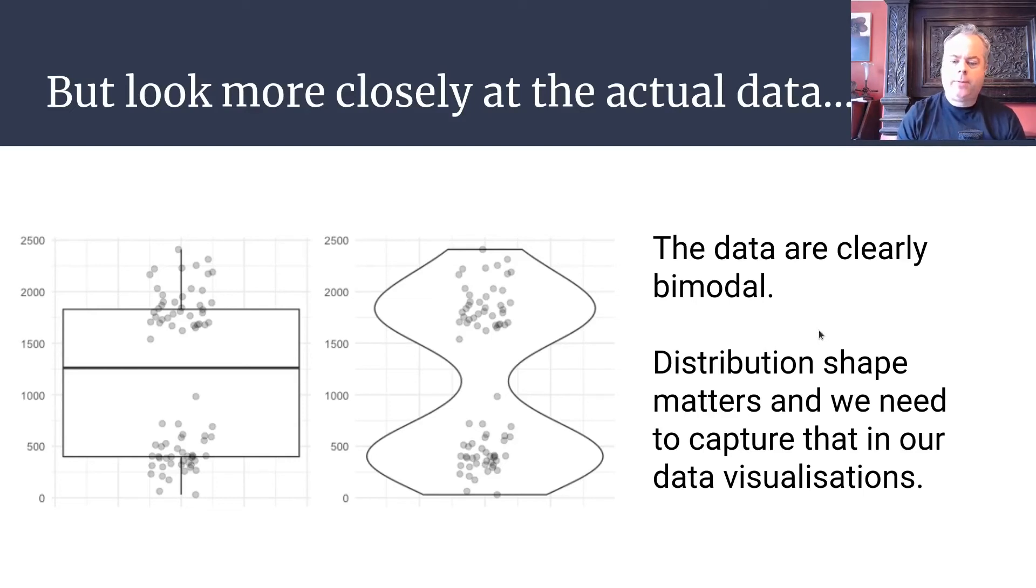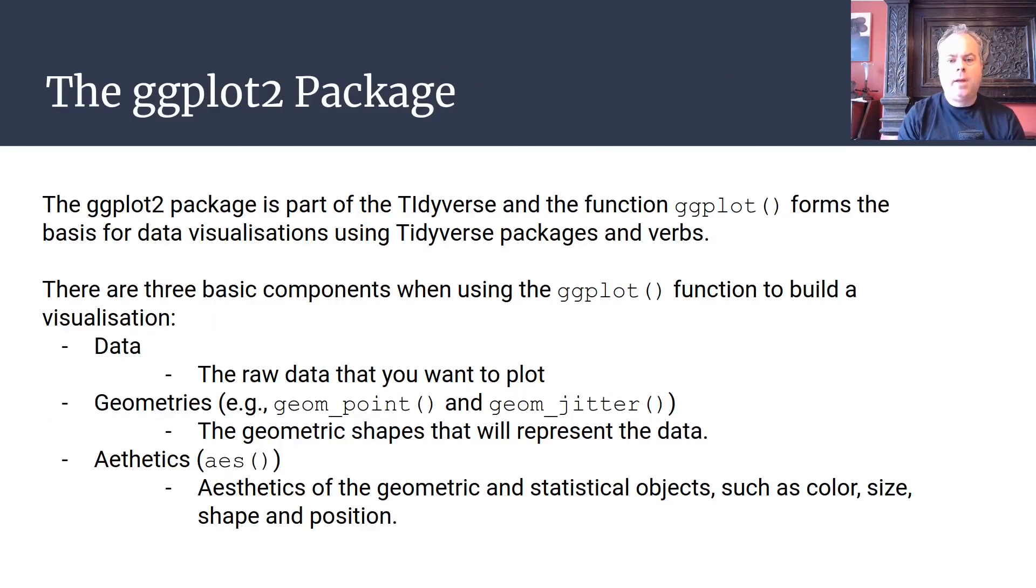We'll be looking at some of the ways in which we can better represent our data in this worksheet. We'll be looking at a way of using a violin geometry to actually capture the shape of the data distribution in our data set. We're going to be doing all of this using the ggplot2 package in R. ggplot2 is a core part of the tidyverse, and within the ggplot2 package we're going to be using the function ggplot because that forms the basis for all data visualizations using different packages in the tidyverse and different functions or verbs within the tidyverse.